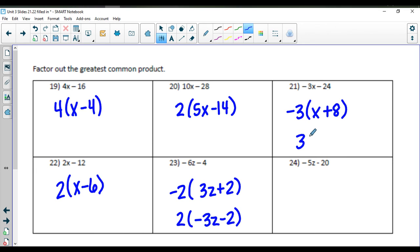Same thing up here on number twenty-one. If you factored out a three, you could do negative x minus eight inside parentheses then. And either of those would be acceptable.